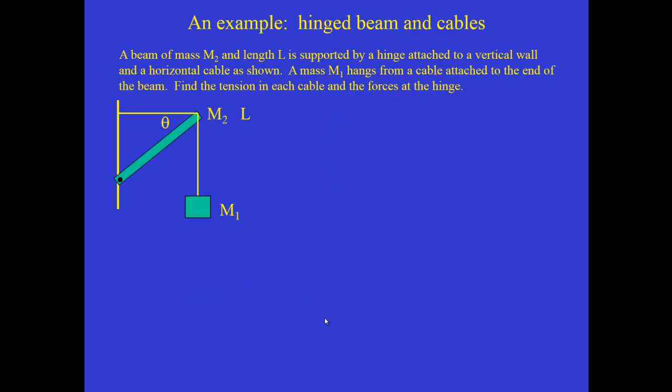So here's an example, a very typical example that you'll see in homework problems. Imagine that you have a rectangular beam that has mass M2 and length L, and it's supported by a hinge that attaches it to the wall. And so there's a horizontal cable that also attaches it to the wall. But imagine that we have a second mass M1 that's hanging from a cable attached also at the end of the beam.